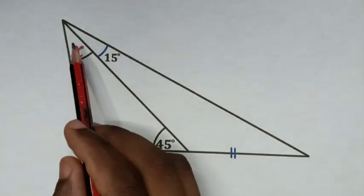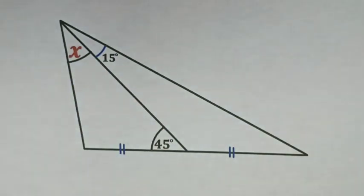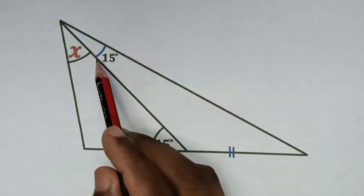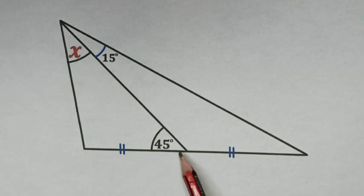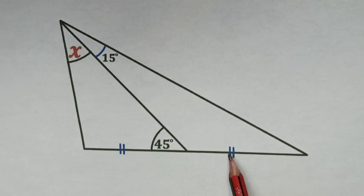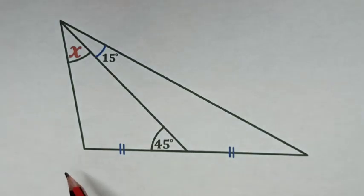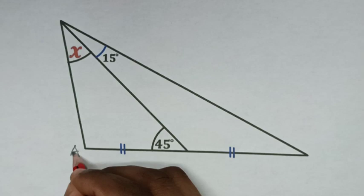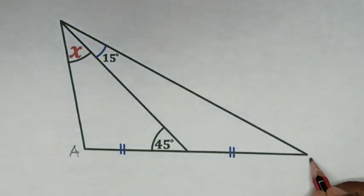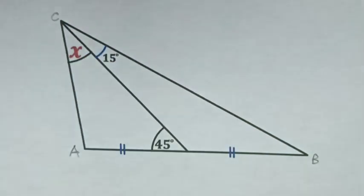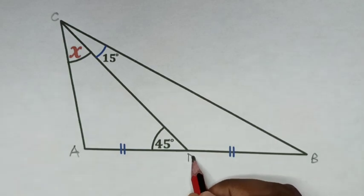Hello, how to find angle x from this diagram where we have been given this angle 15 and this angle of 45, such that this line is equal to this line. In the first step we start naming the points in this diagram. We let this first point be A, this point B, this point C, and this point D.